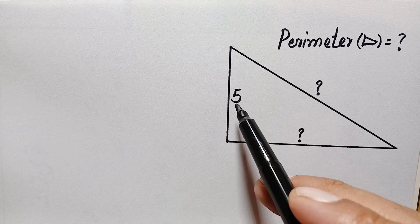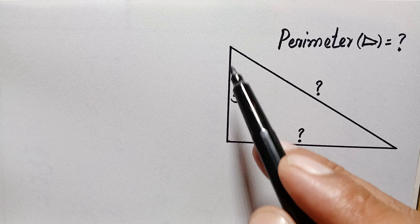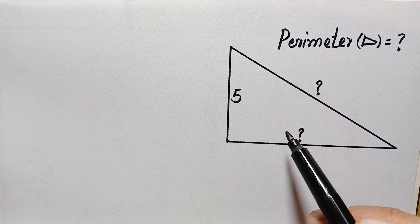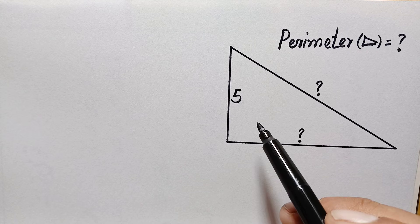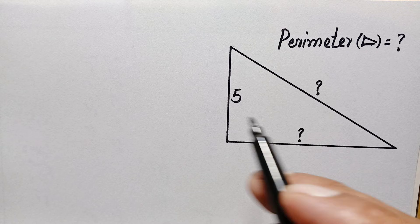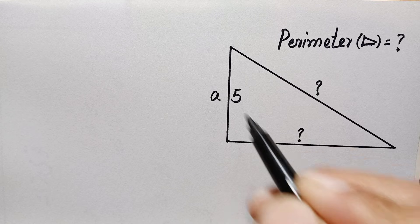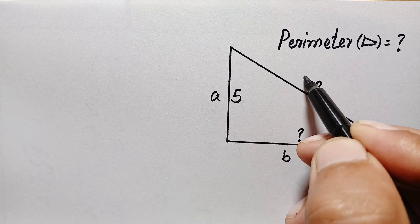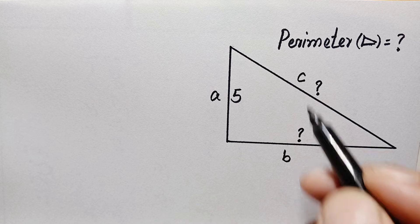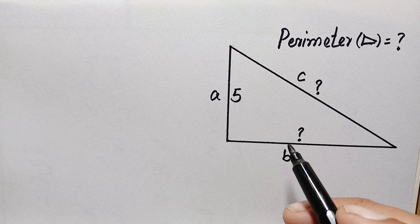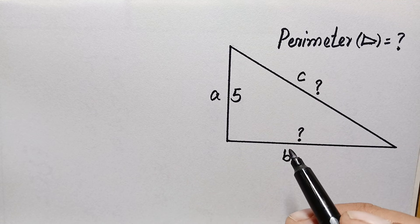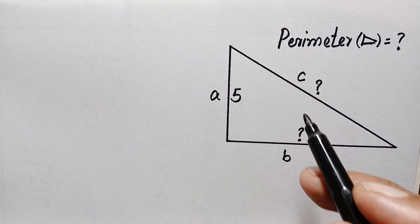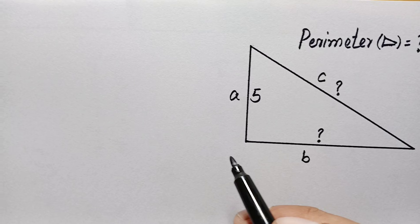Remember that if we change the width of this perpendicular height, there are infinite possible solutions to this problem. Let's start our solution. Let us suppose this is side a of this triangle, this is side b, and this is side c. We will try to find the values of b and c. Since this is a right angle triangle, we will apply the Pythagorean theorem to find b and c.